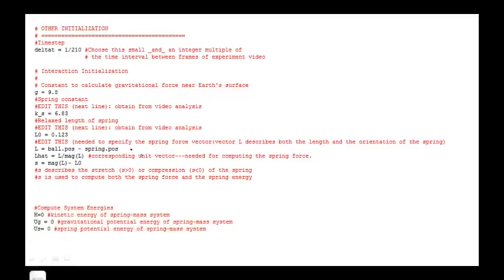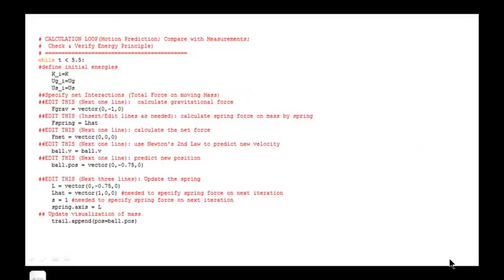Next we come to the calculation loop where we make motion predictions. We'll skip the energy parts for now and focus on the place where we apply Newton's second law. As you know we need to specify the interactions, the forces acting on the mass, then add them up, use Newton's second law to then predict the new velocity and then use that to predict the new position. You'll need to add all this in to make proper motion predictions. Don't forget to correct the lines of code that update the spring force.